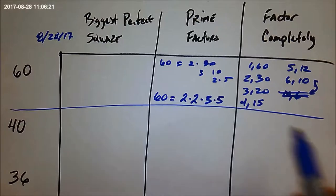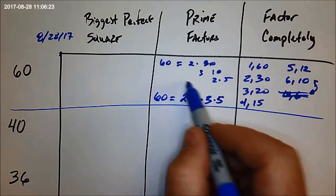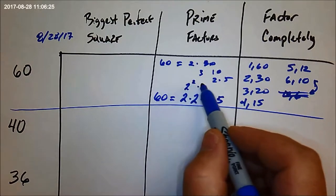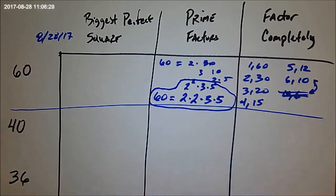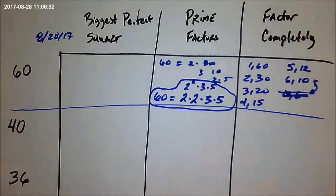That's the prime factorization. Now there's another way you could write this, so I'm going to have to put it right above. You could do two squared times three times five. Either of these would be acceptable answers. But if you only write one two, then it's not quite right, because there are two twos. It's four times 15. Do you see? All right.